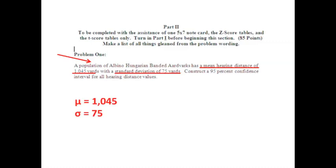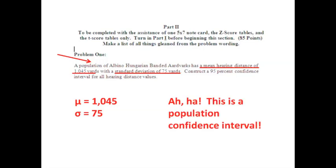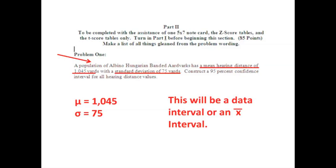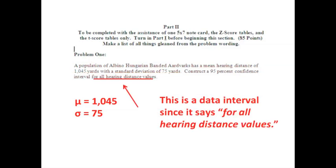Mu has a value of 1,045 and sigma has a value of 75. This is absolutely a population confidence interval — that is undeniable. Now we're ready to move. Our next question is: if this is a population confidence interval, are we being asked to construct an interval for individual data, or are we being asked to construct an interval for the sample mean or the x-bar distribution? The phrase 'for all hearing distance values' says nothing about a sample mean. Therefore, this is a population confidence interval raw data value interval.